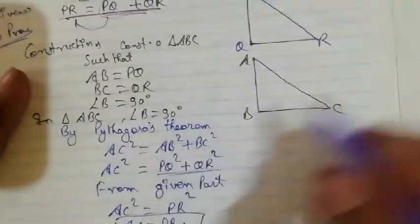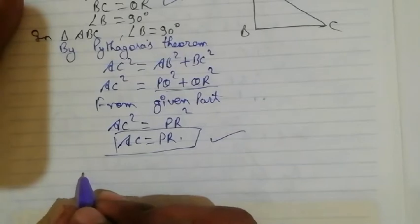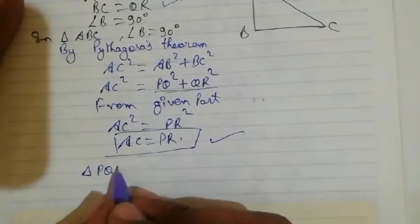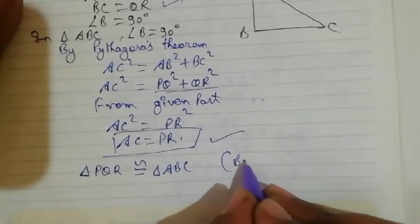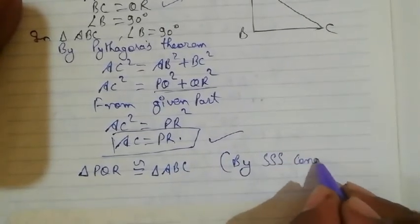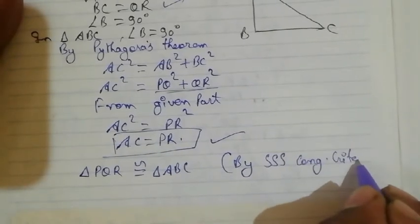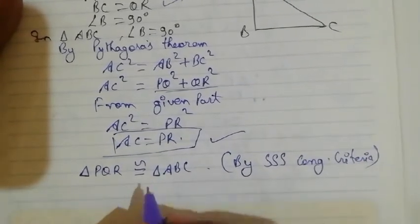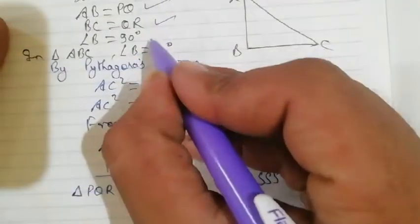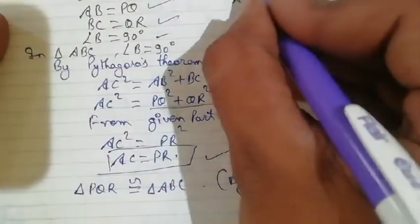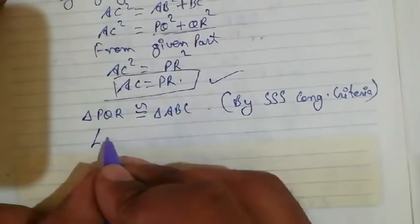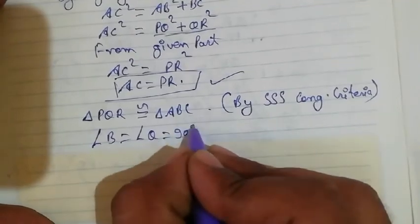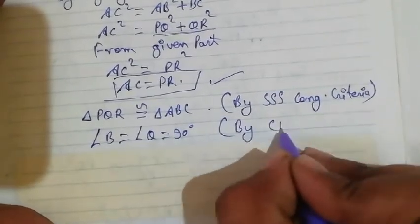Now we have AB = PQ, BC = QR, and AC = PR. So by the side-side-side congruency criterion, triangle PQR is congruent to triangle ABC. Since these two triangles are congruent, angle Q equals angle B. Since angle B = 90°, by CPCT (corresponding parts of congruent triangles), angle Q = 90°. This proves the converse of the Pythagoras theorem.